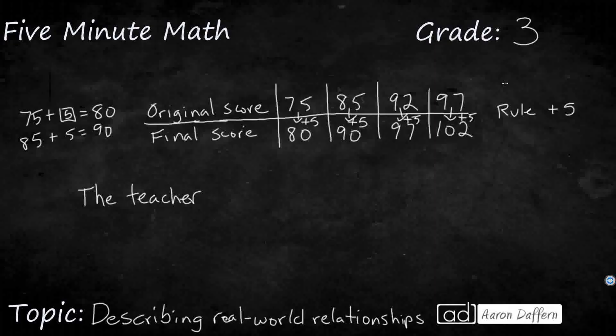Now, how could we describe that in words? Well, we can, what did the teacher do? The teacher, and we're going to use the words here for our operation. The teacher adds 5 points to what? To the original score to get what? To get the final score. And that's how we can describe this relationship in words.